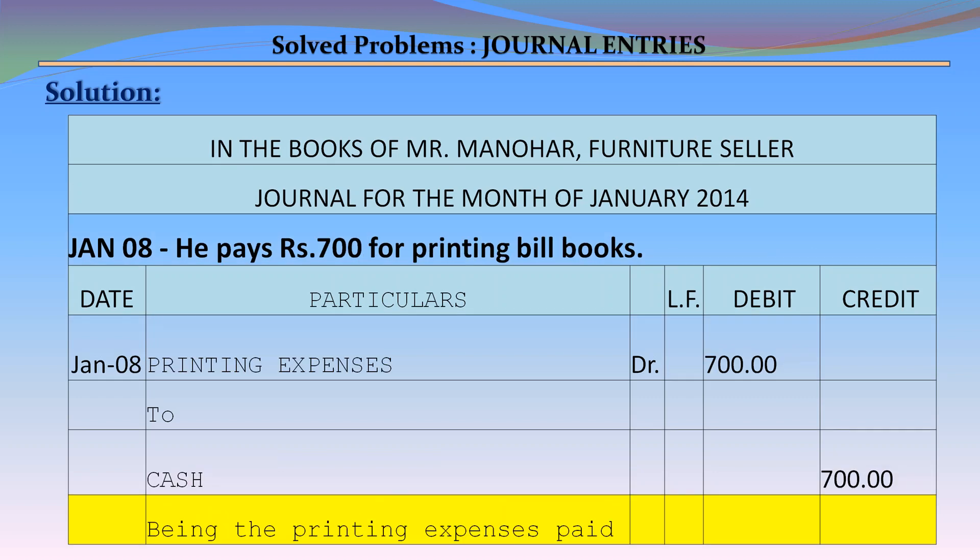January 8 – He pays Rs. 700 for printing bill books. Journal entry: Printing Expenses debit Rs. 700 to Cash Account credit Rs. 700, being the printing expenses paid.